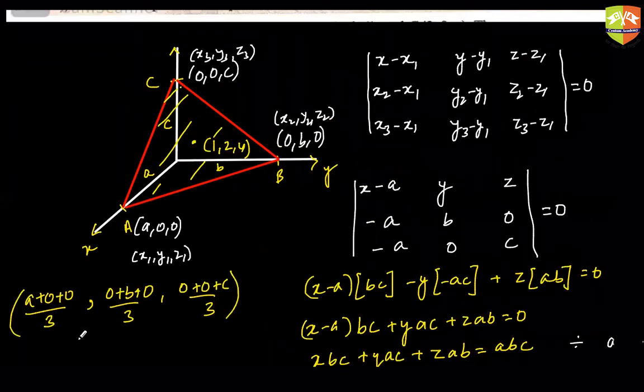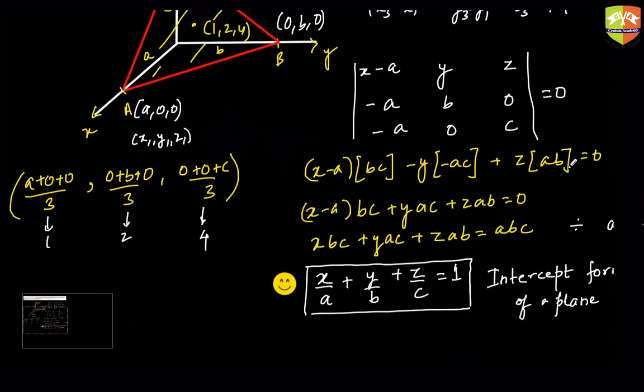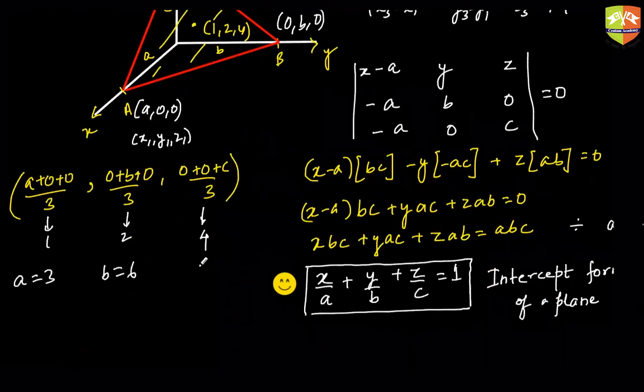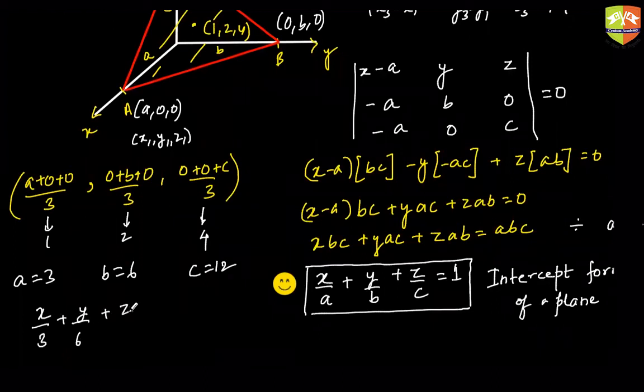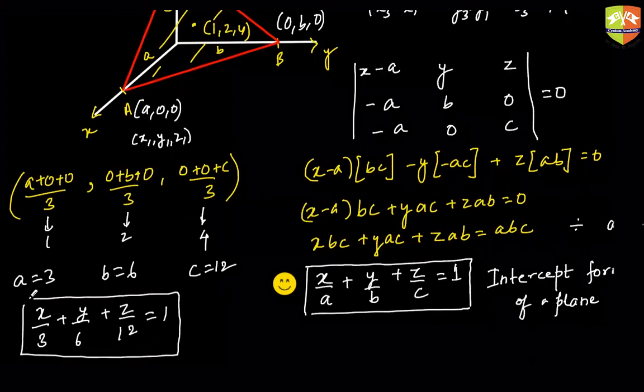And what is that? (1, 2, 4). So this is 1. This is 2. And this is 4. Am I right? Which clearly means a/3 is 1. So a is 3. b/3 is 2. So b is 6. And c/3 is 4. That means c is 12. So I can say that the equation is x/3, y/6, z/12 is equal to 1. That becomes your desired equation of the plane. If you want, you can multiply throughout with a 12 and write down the answer. Is this clear?